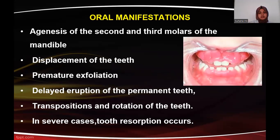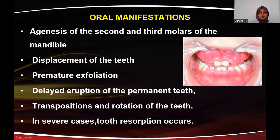The oral manifestations of cherubism include agenesis of the second and third molars — that is, missing second and third molars in cherubic patients. There will also be displacement of teeth, premature exfoliation, delayed eruption of permanent teeth, and transposition and rotation of teeth. In severe cases, root resorption occurs.